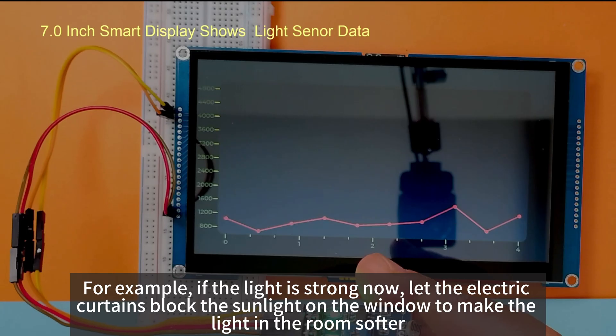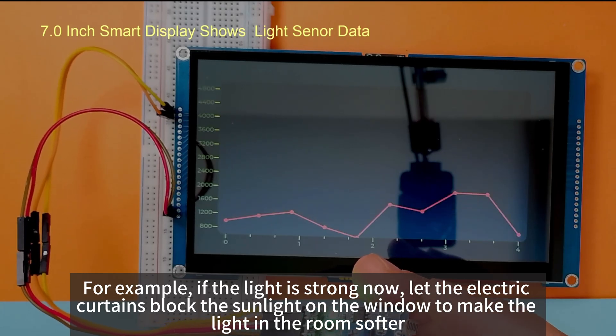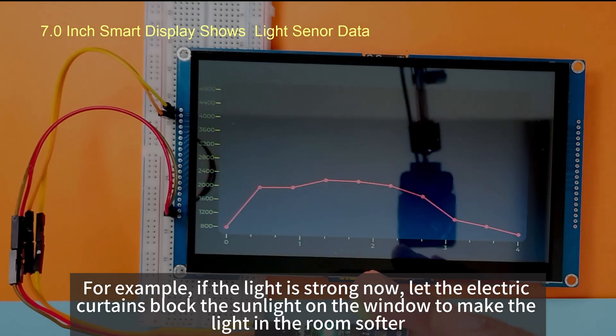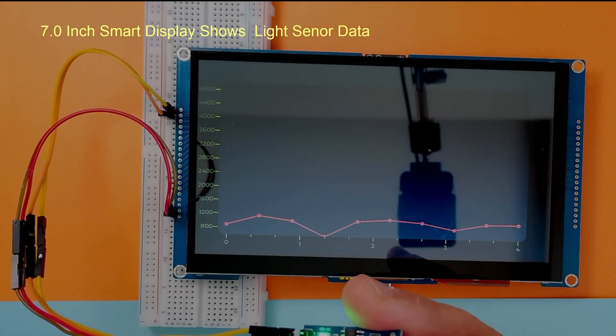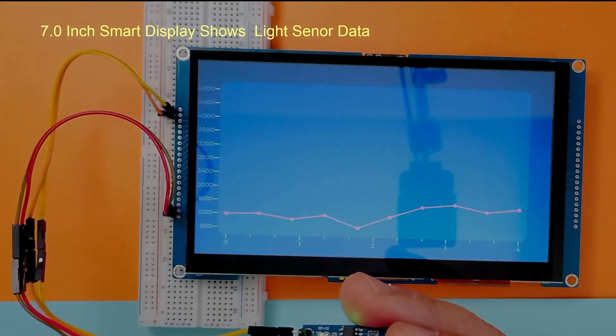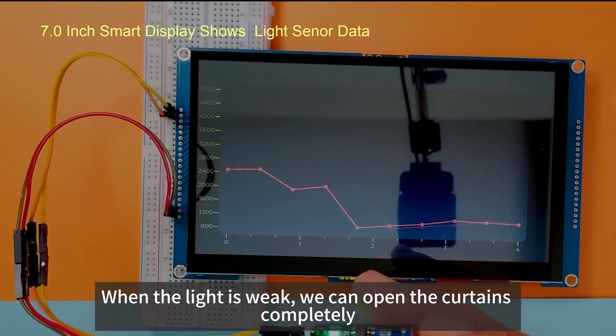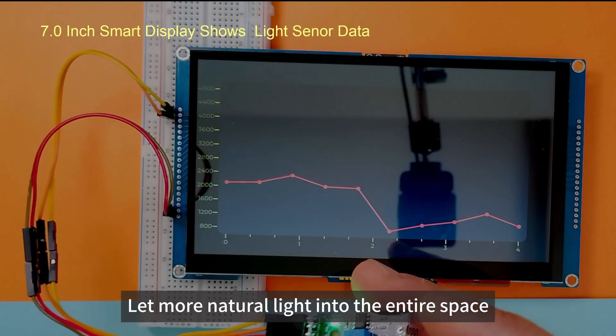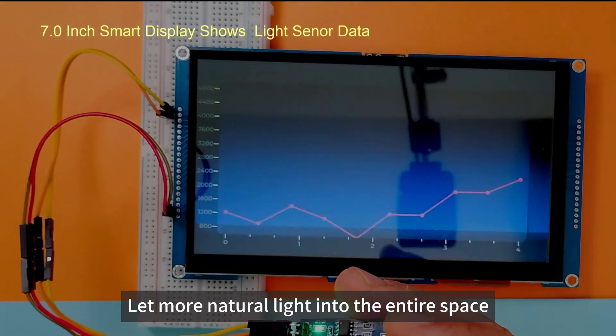It can also be used in smart homes to control the opening and closing of curtains. For example, if the light is strong now, let the electric curtains block the sunlight on the window to make the light in the room softer. When the light is weak, we can open the curtains completely. Let more natural light into the entire space.